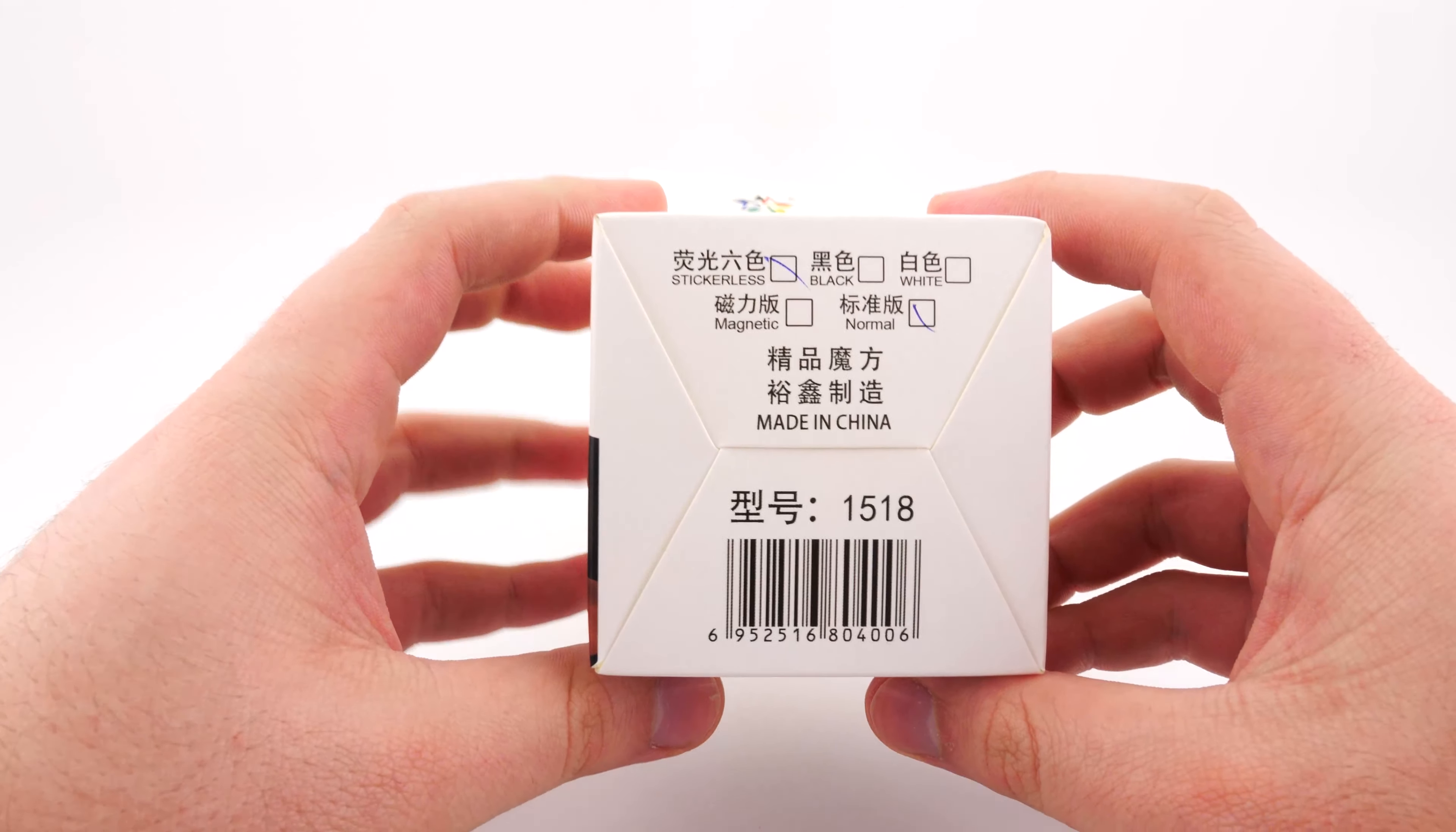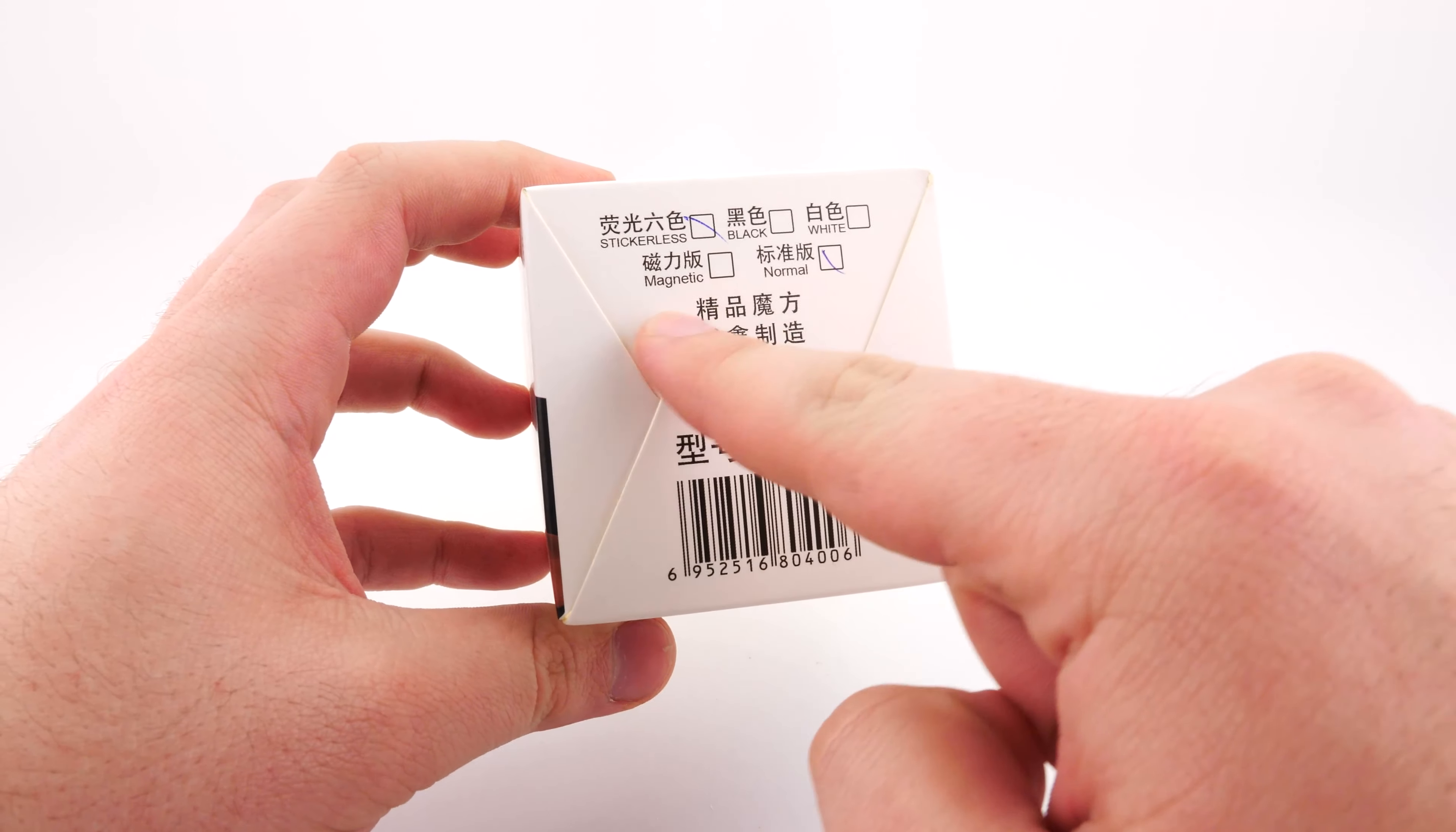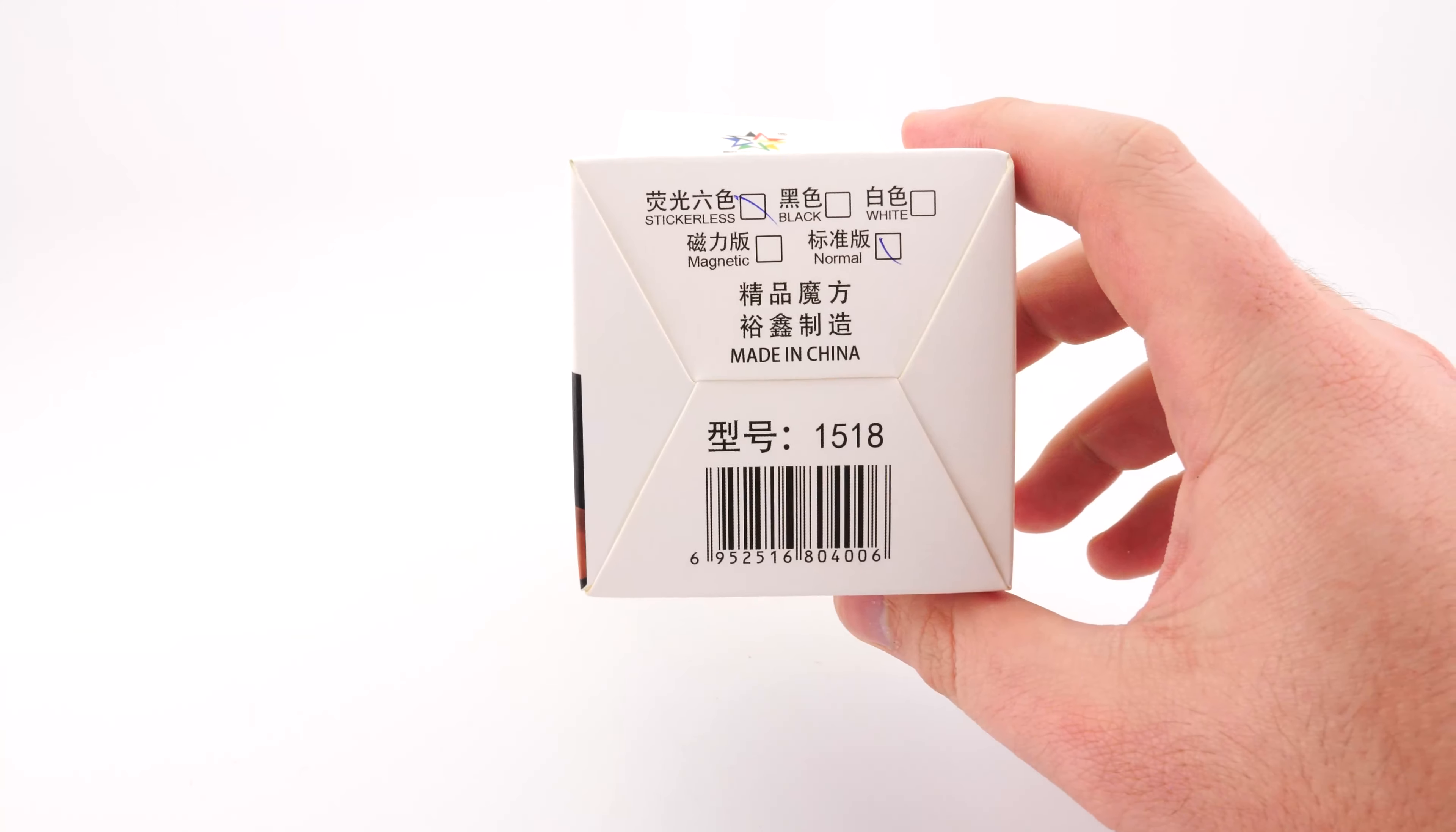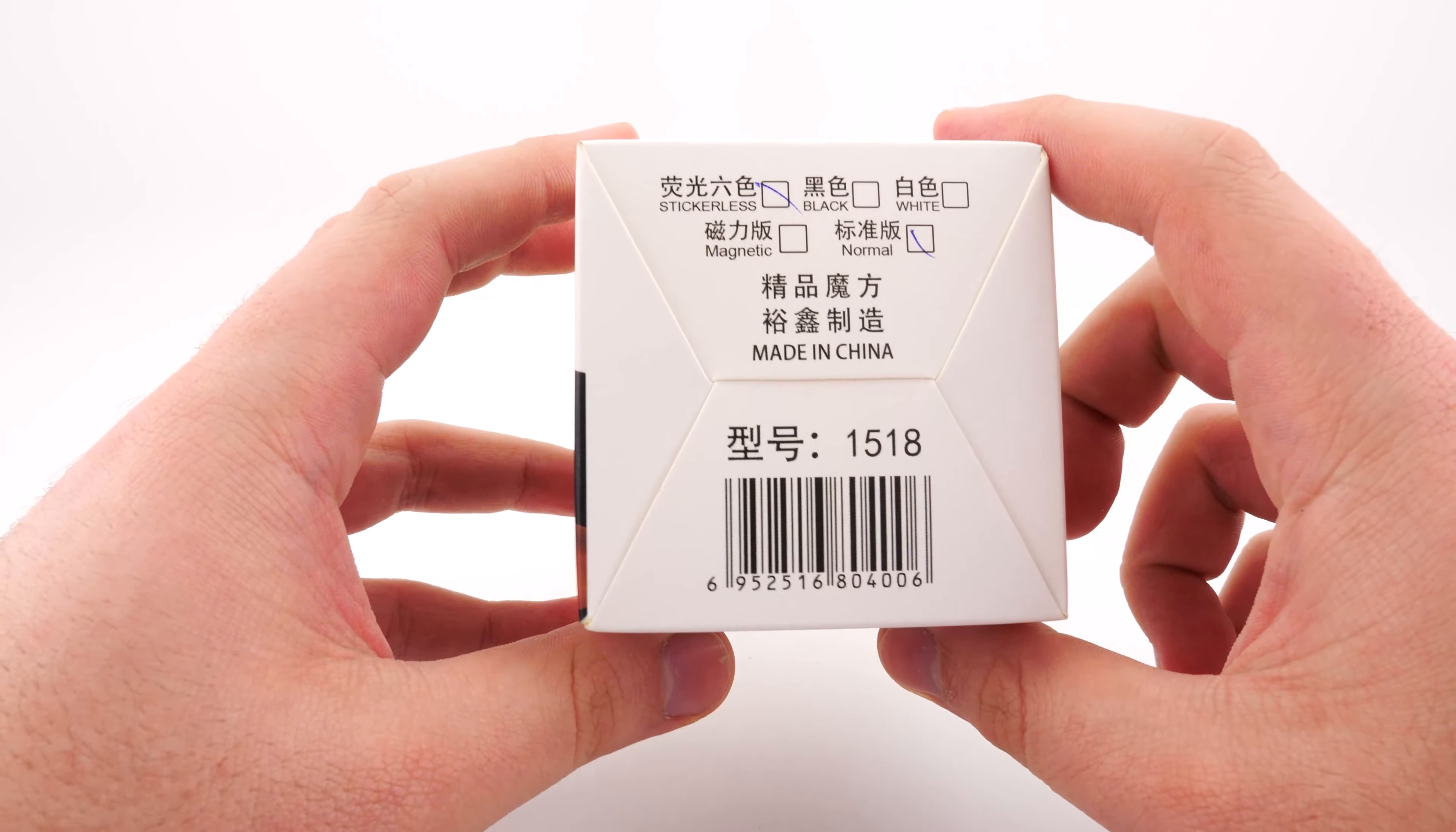If we take a look at the box real quick at the bottom it does say stickless, black, white, magnetic, normal. So the top is the color options and then the bottom is the type. This is ticked for normal so I would say this is just the standard Yushin Little Magic Pyraminx that's been rebranded with the new box. But the fact that there is magnetic there leaves me to believe that there will be a new version of the pyraminx coming.